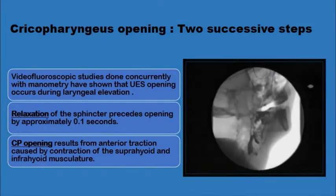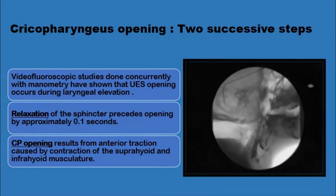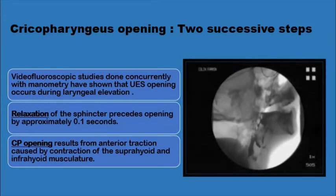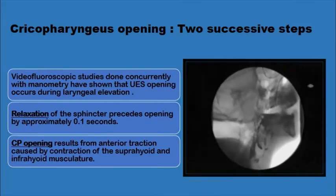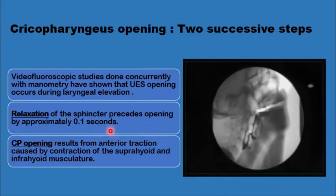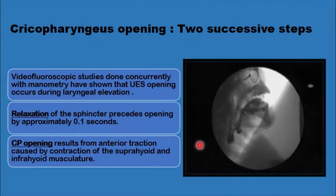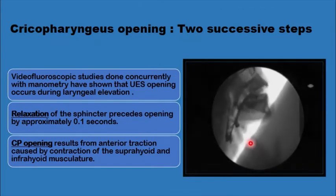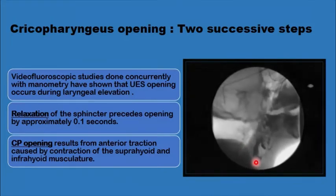When the cricopharyngeal muscle has to open to allow the passage of a pharyngeal bolus, it opens in two successive steps. It relaxes first, when the pressure drops to less than 10 mmHg, and then 0.1 second later, it opens up by the anterior and superior traction of the hyoid and the larynx on the cricoid. This opens up the relaxed muscle.